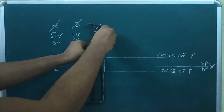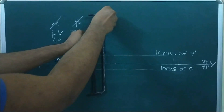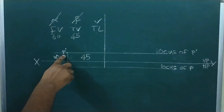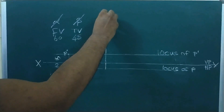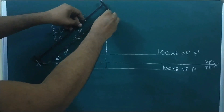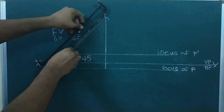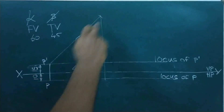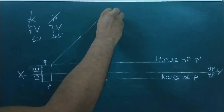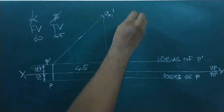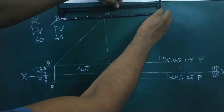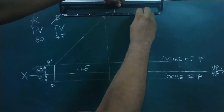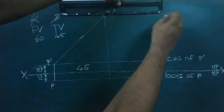After completing that, now measure the true line length, that is 70 mm, in compass. From point P-dash, make an arc on the perpendicular extension line. That intersection is our point Q1-dash. Now name the point and draw the locus line, naming it as locus of Q-dash.